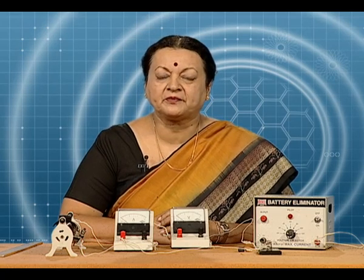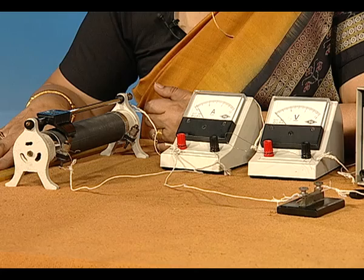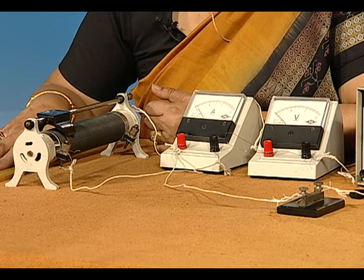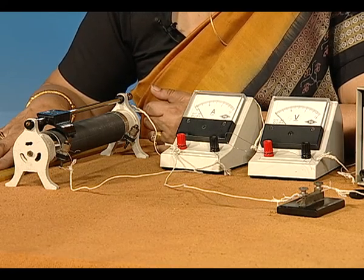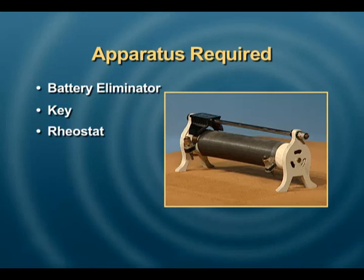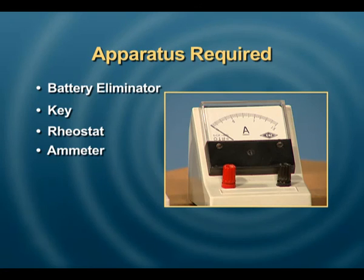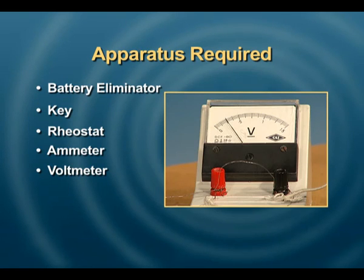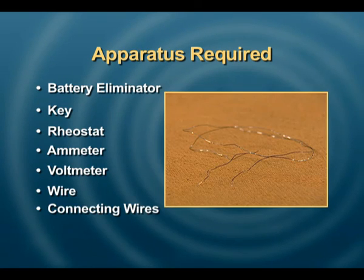We will also try and see if this experiment can help us find the material property of specific resistance of the wire. In order to do that, we require some apparatus: a battery eliminator, a key, a rheostat, an ammeter, a voltmeter, and the wire in question.